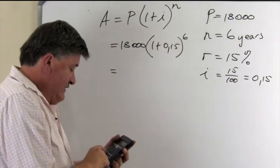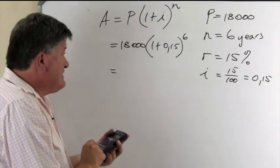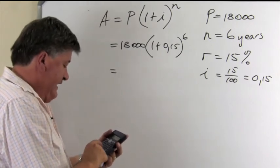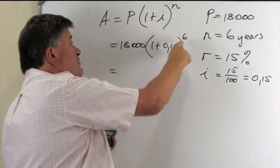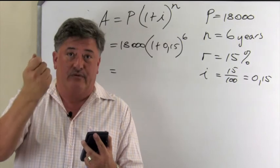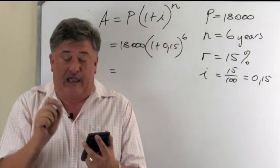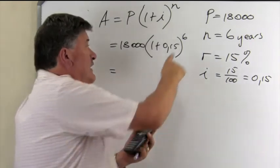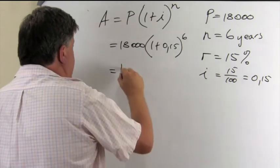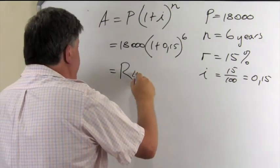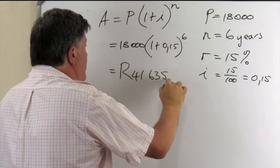So, if we calculate, we say 18,000, bracket 1 plus 0.15. We close the bracket and now you use your button on your calculator where you raise it to the power. And you will find that just below your arrow key and the exponent then is 6.